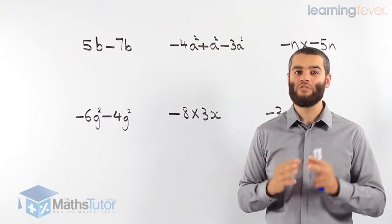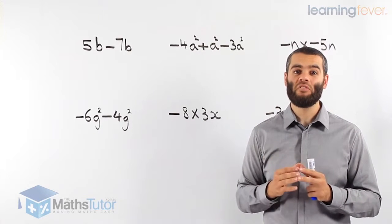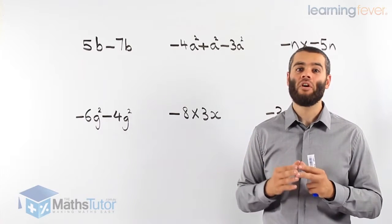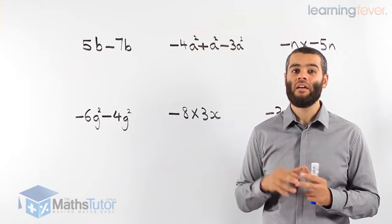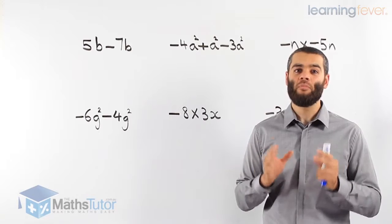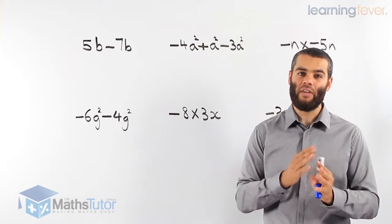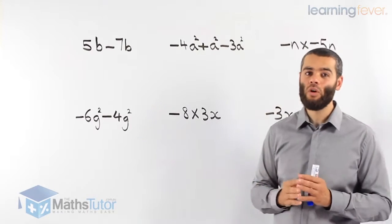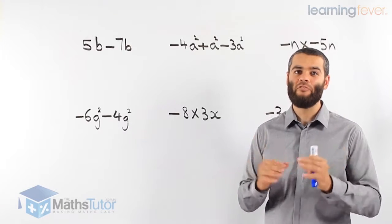Hey guys, so you know how to use algebra now. However, we're going to go another step further — we're going to use directed numbers in algebra. All of a sudden, we have negatives as well. We need to know how to use algebra and negatives together. From day one we said that in algebra, we follow the same rules as normal numbers. Pronumerals behave the same way as numerals do, so whatever rules we have for numerals, we apply them for pronumerals as well. Let's see these examples — you'll notice it's nothing different to numerals except that we have pronumerals as well.